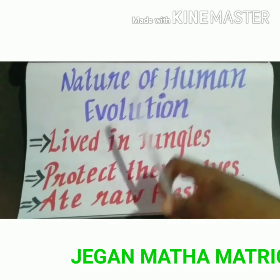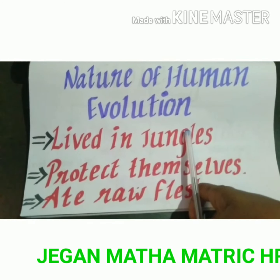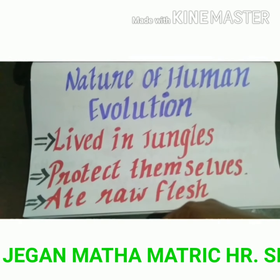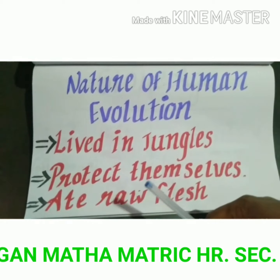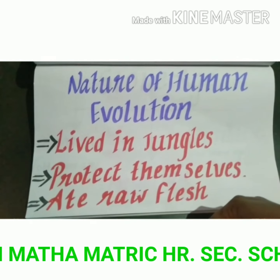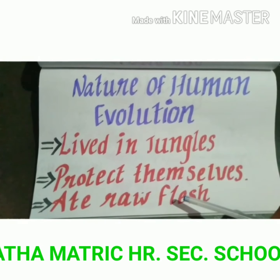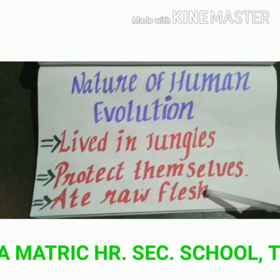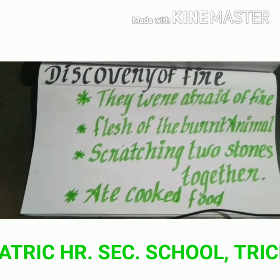Nature of Human Evolution: Early humans lived in jungles along with animals. They used stone tools to protect themselves and drive away animals, dig out roots, etc. The most important thing is that they ate everything raw, including flesh, and they did not know the use of fire in the beginning.